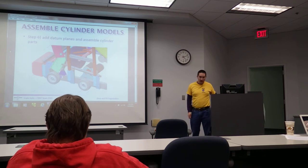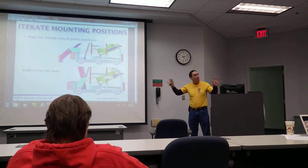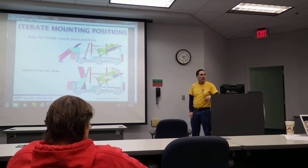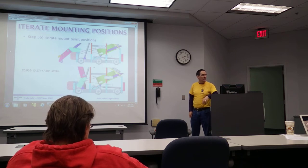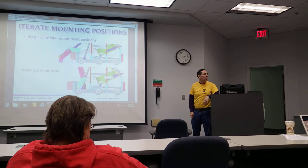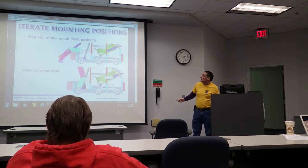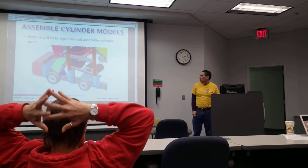You'll notice that all of this was done with no geometry — just datum axes, which all solid modeling software will have. If you're doing it in 2D software with crosses or whatever it is, once you have the stroke worked out and you think you know which cylinder you want to use, you download the assembly model for that cylinder.